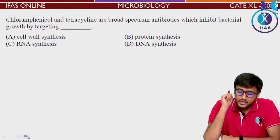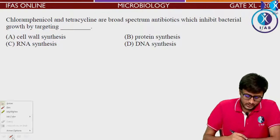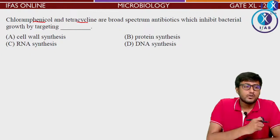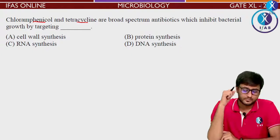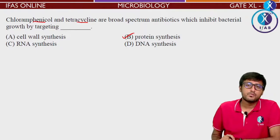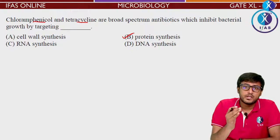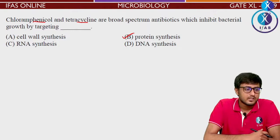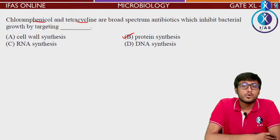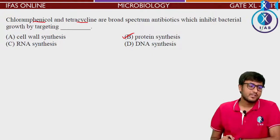Question: Chloramphenicol and tetracycline are broad spectrum antibiotics which inhibit bacterial growth by targeting - cell wall synthesis, protein synthesis, RNA synthesis, or DNA synthesis? Correct - protein synthesis is the answer. Chloramphenicol binds to the 50S subunit and hinders protein translation. Tetracycline binds to the 30S subunit and blocks aminoacyl-tRNA from entering. So both target protein synthesis.